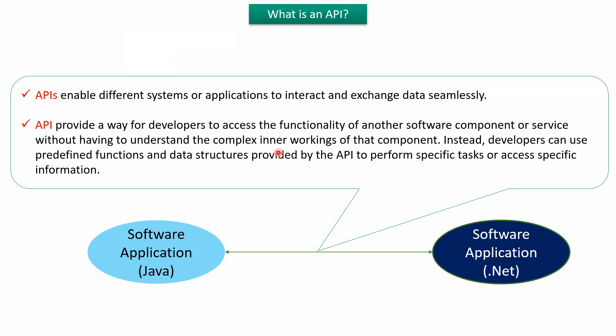APIs enable different systems or applications to interact and exchange data seamlessly. API provides a way for developers to access the functionality of another software component or service without having to understand the complex inner workings of that component or service. Instead, developers can use predefined functions and data structures provided by the API to perform a specific task or access specific information.